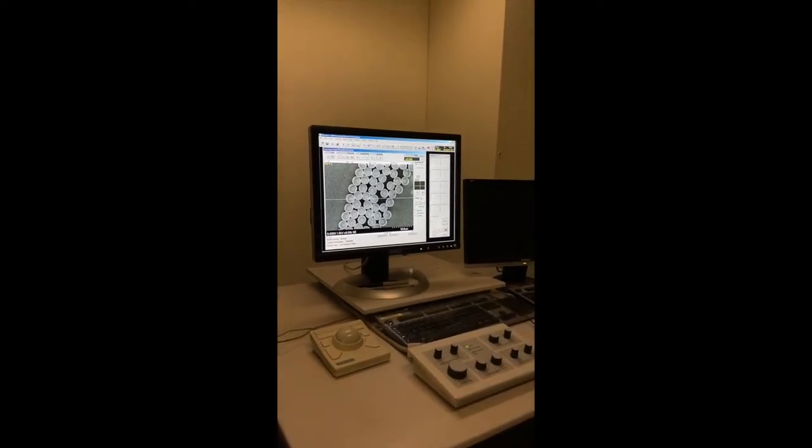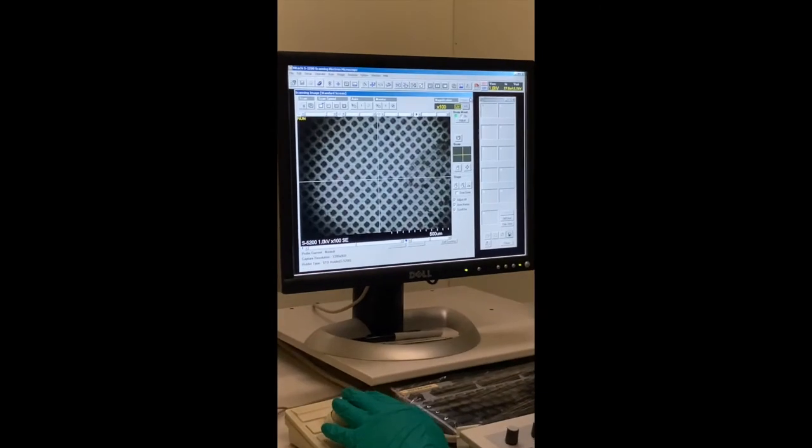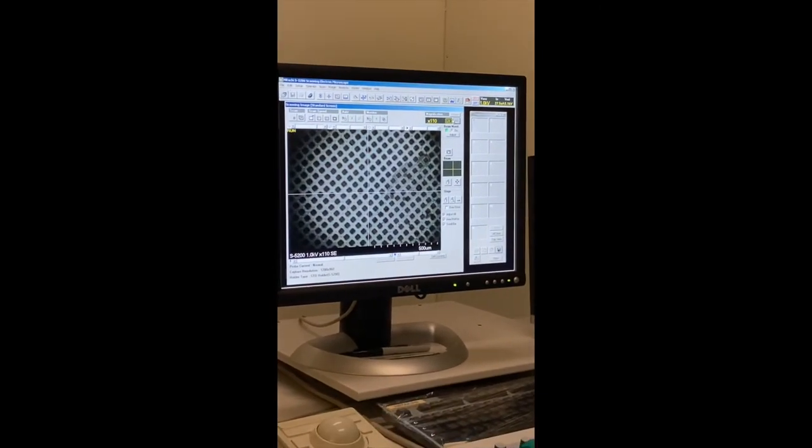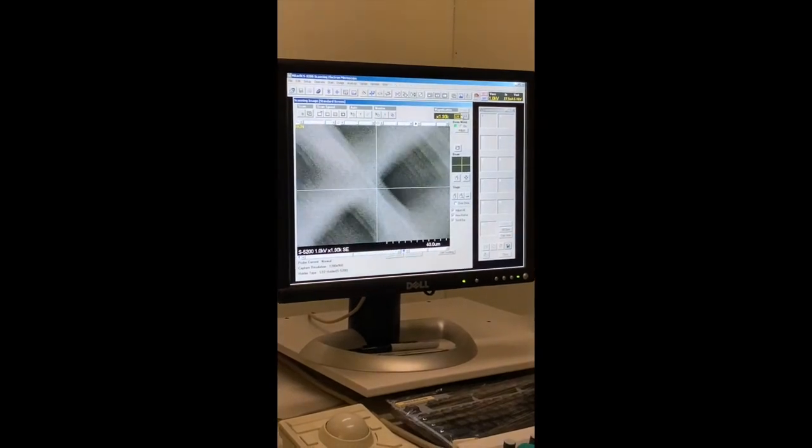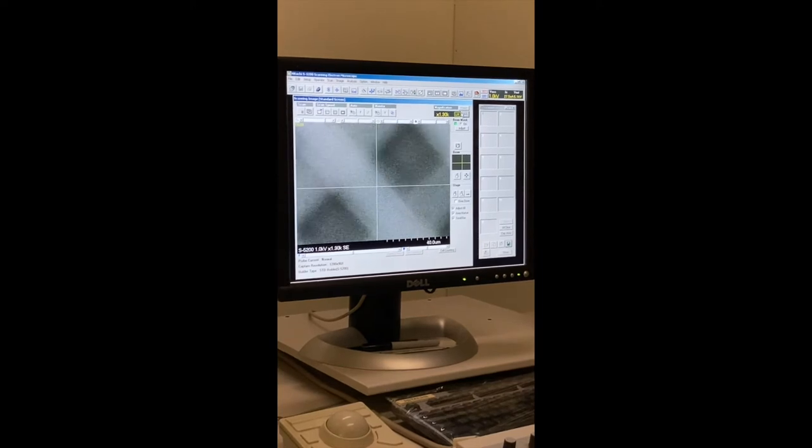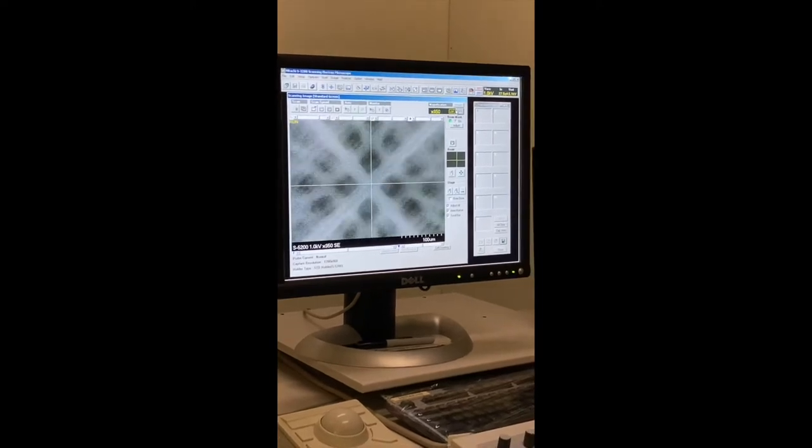So similarly to optical microscopy, we need to spend some time searching for our actual sample. If we made our solution properly dilute, there should be no more than a few hundred nanoparticles spread out on this grid. So they might take a little bit of time to find, but hopefully they're there.